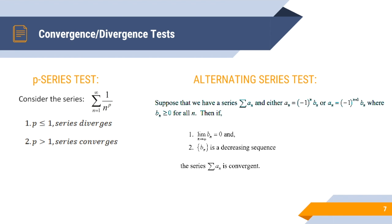The p-series test: if the power of the function is less than or equal to 1, the series diverges; if it's greater than 1, it converges. The alternating series test: if the absolute value of the terms of the function are decreasing, and the limit as n of the function approaches infinity equals 0, then the series is convergent.